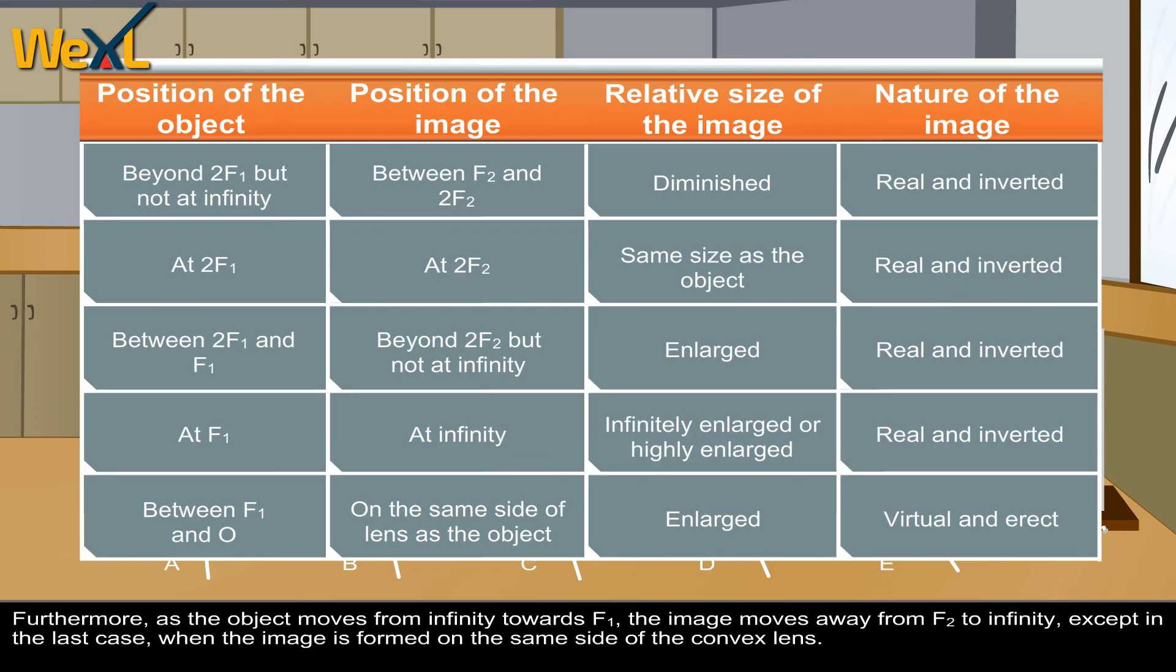Furthermore, as the object moves from infinity towards F1, the image moves away from F2 to infinity, except in the last case when the image is formed on the same side of the convex lens.